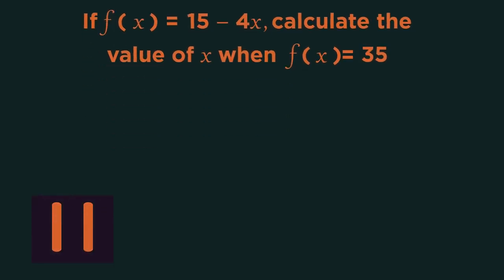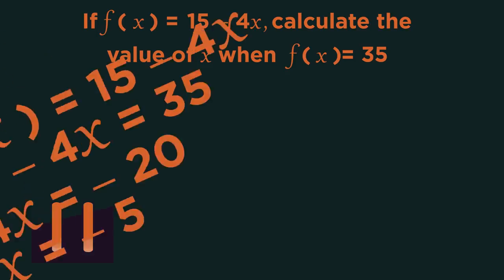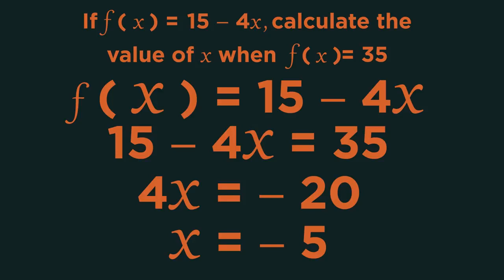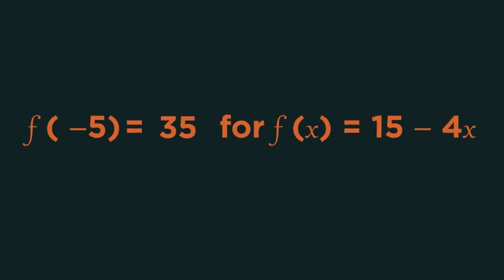Pause the video, solve for x, and click play when you're ready. Did you get x equals negative 5? So an input of negative 5 will give an output of 35.